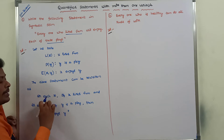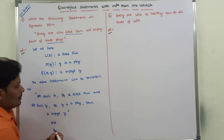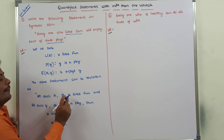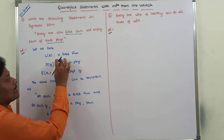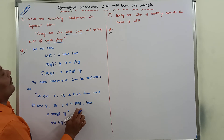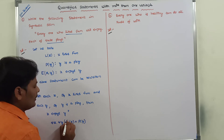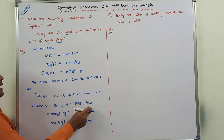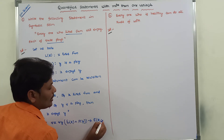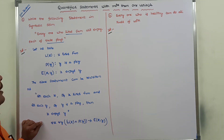Now we represent this in symbolic form. 'For each x' is the universal quantifier — for all x. 'For each y' is for all y. 'x likes fun' means L(x). 'y is a play' means P(y). There is a conditional 'if-then', and 'x enjoys y' is E(x, y). So the symbolic representation is: ∀x ∀y [L(x) ∧ P(y) → E(x, y)].